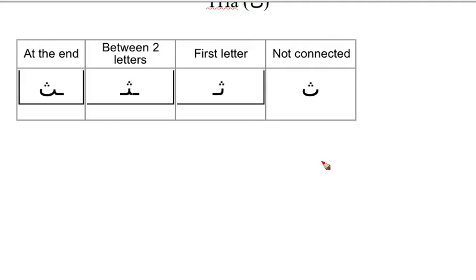I will write a word that starts with the letter THA in the beginning. So we will write the word THAWR. THAWR means cow, the male cow. The first letter is THA. THAWR, THAWR. That's a male cow.